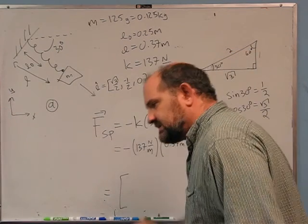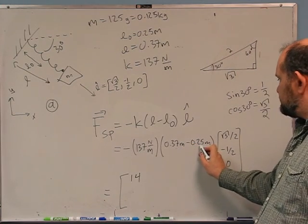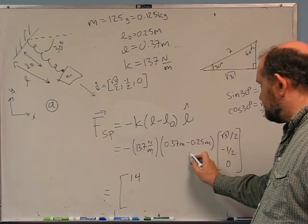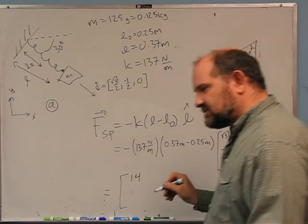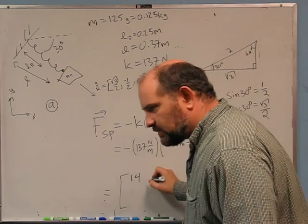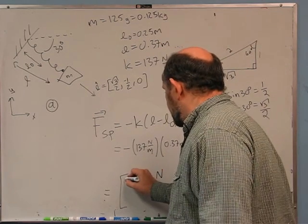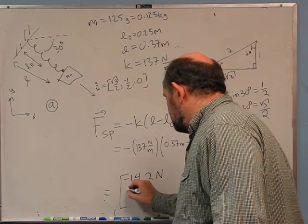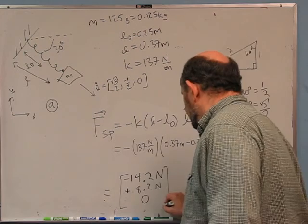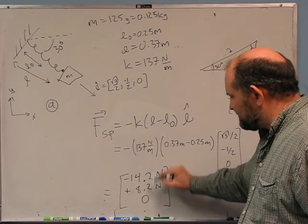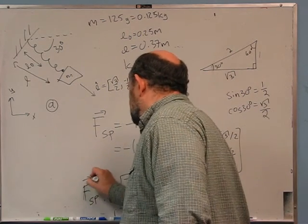Having done that on my calculator — how many sig figs do I have? 0.37 − 0.25 = 0.12, which has two sig figs. The 30 degrees is probably good to two sig figs as well. I'm going to write one extra sig fig just because. The result is (−14.2 N, +8.2 N, 0).